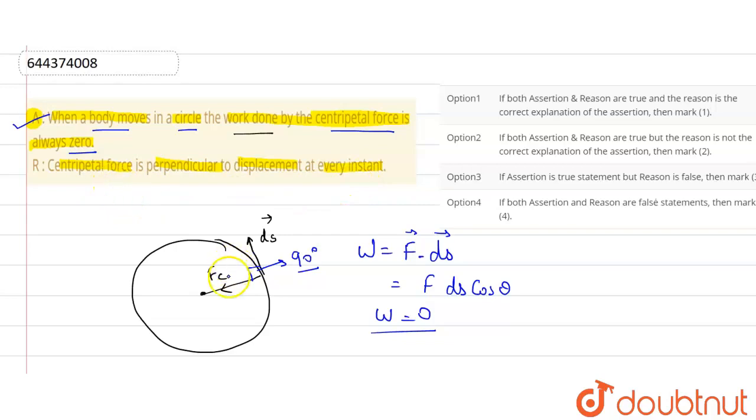We can see that this is centripetal force and this is displacement, and they both are perpendicular at every instant. And that is why cos theta is becoming zero and the work done is becoming zero. So we can say that this reason is also correct and it correctly explains why this assertion is happening.